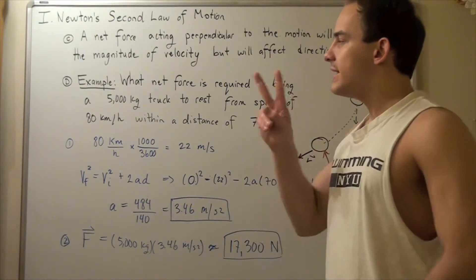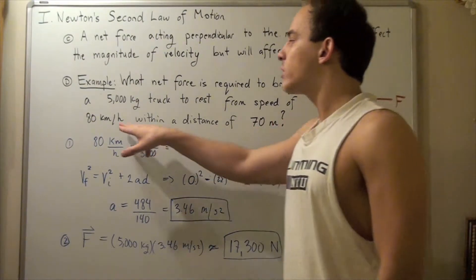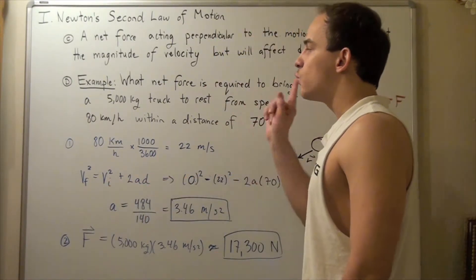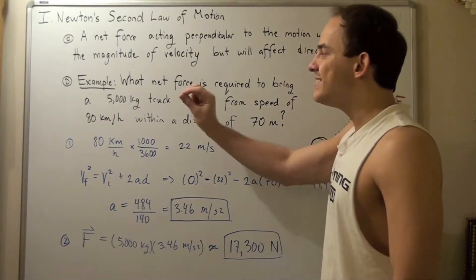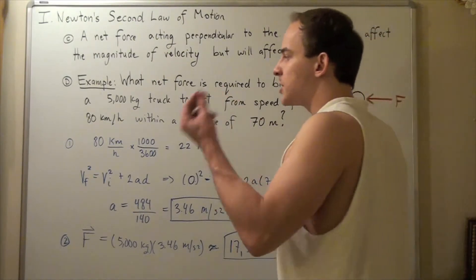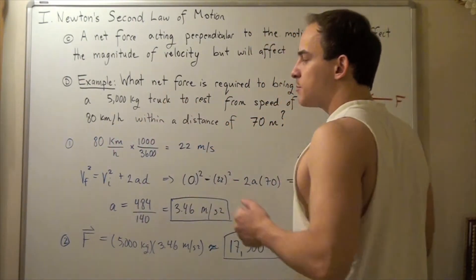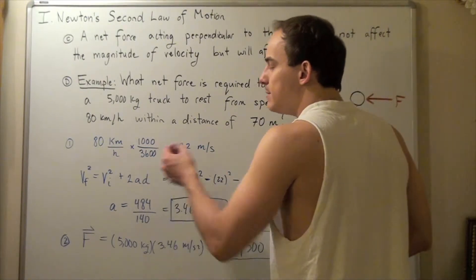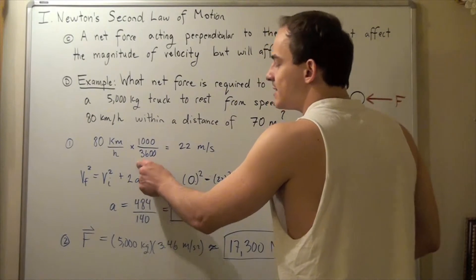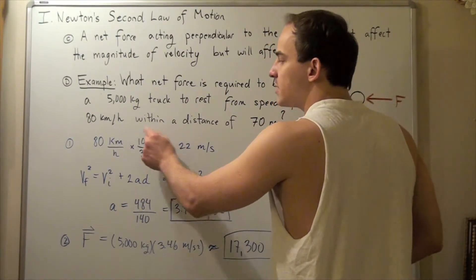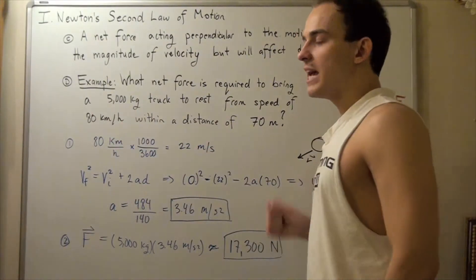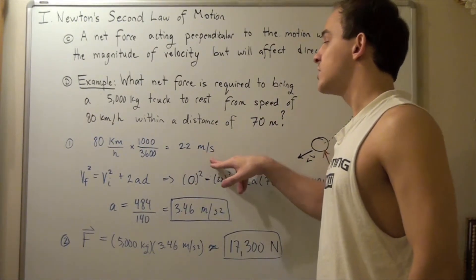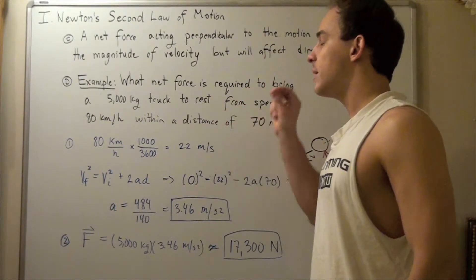We're going to solve this problem in two steps. In the first step, we must first convert our km an hour to meters per second. And then we must use the following equation because we're making the assumption that our acceleration, or actually deceleration in this case, is constant. So, let's first convert 80 km an hour to our meters per second. We simply multiply by 1000 meters divided by 3600 seconds. Because there's 60 minutes in an hour and 60 seconds in a minute. We multiply these guys out and we get 22 meters per second. So, this is our initial velocity or the magnitude of our initial velocity.